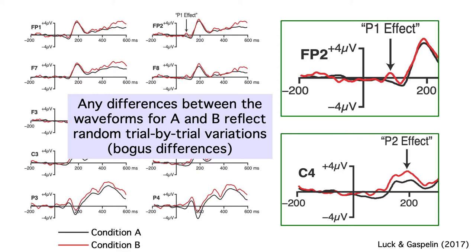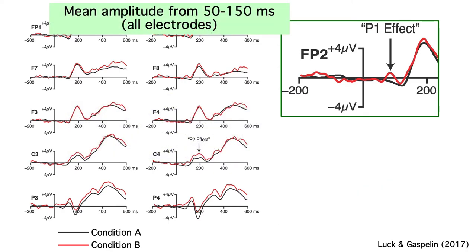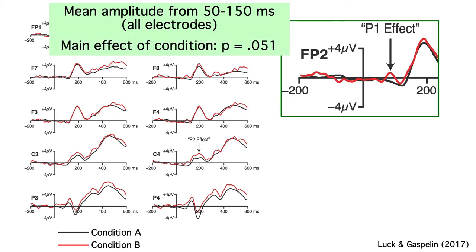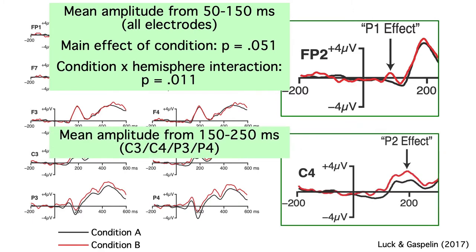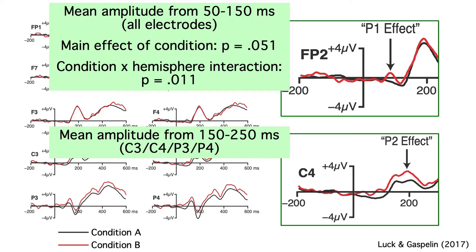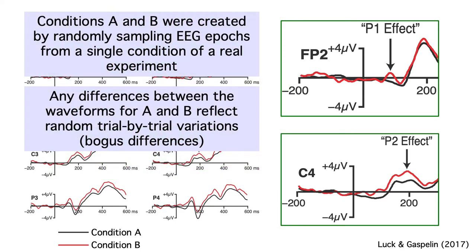To statistically analyze the data, I used the time windows and electrode sites that looked like they had big effects. I measured the P1 effect from 50 to 150 milliseconds at all electrode sites, then ran a three-way ANOVA with factors of condition, electrode hemisphere, and anterior-to-posterior electrode position. The main effect of condition wasn't quite significant, but the condition-by-hemisphere interaction was significant at p = 0.011. I measured the P2 effect from 150 to 250 milliseconds at the central and parietal electrode sites and found a statistically significant main effect of condition — even though there are no true differences between these conditions.